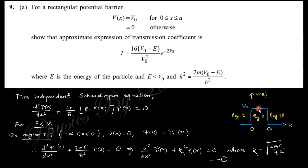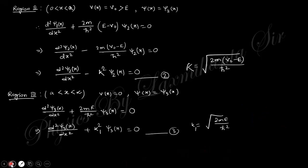This is why tunneling effect is happening — otherwise the particle would simply be transmitted. In the tunneling effect, E must be less than the potential barrier V₀. In region 1 the potential is 0, so the differential equation is as shown. This is similar for region 3 also. But in region 2 there is a potential V₀, so the expression is different.